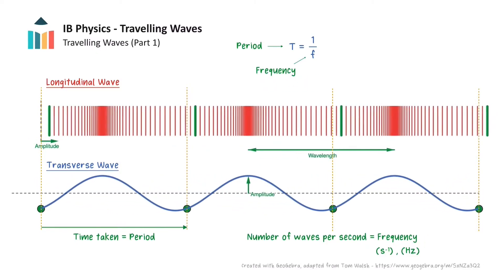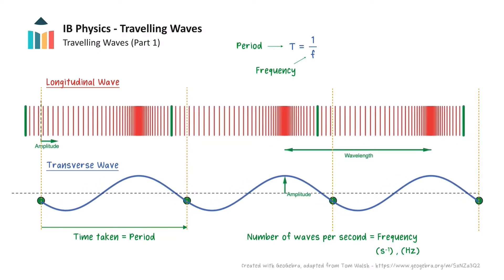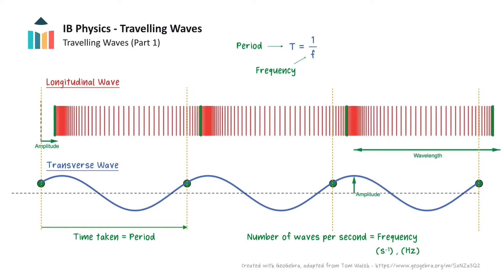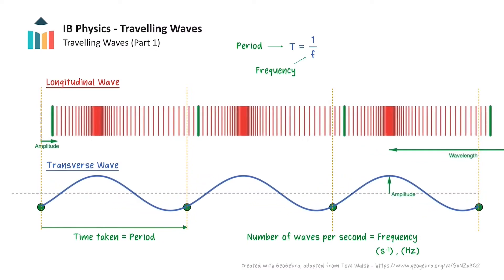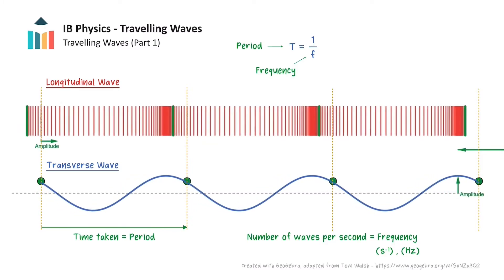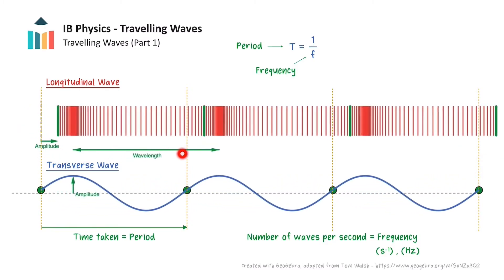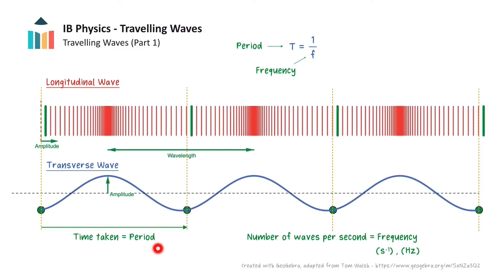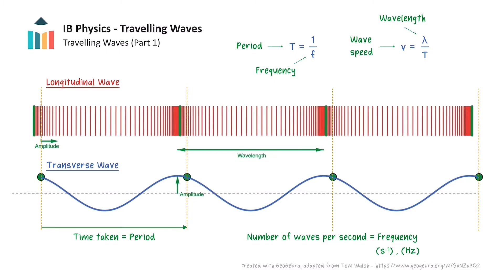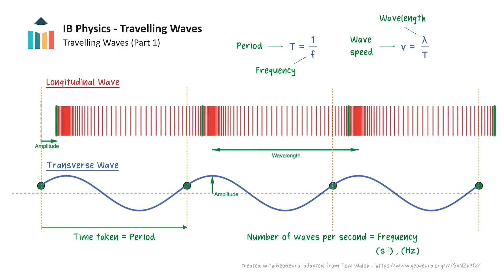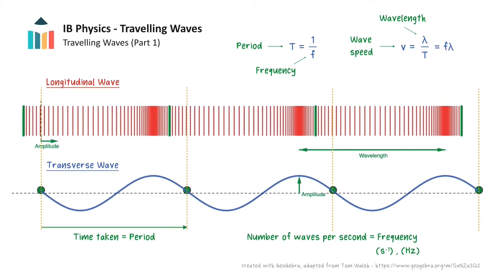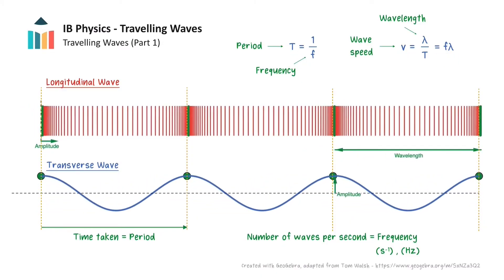Period and frequency are reciprocals of each other, as shown in this equation. If we combine these concepts together, we can get an expression for how fast our wave is moving through our medium, or the wave's speed. Recall that speed is equal to a distance divided by a time. Since the wavelength is the distance that the wave moves, and the period is the time it takes to move a distance of one wavelength, wave speed is equal to wavelength, represented by the Greek letter lambda, divided by the period. Putting in this expression for the period, we can rewrite this as frequency multiplied by wavelength.